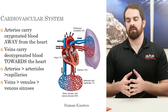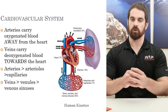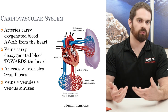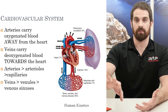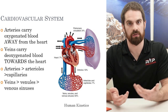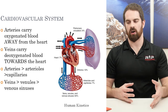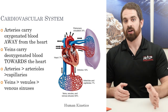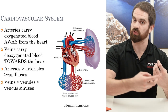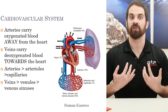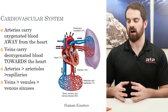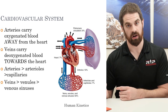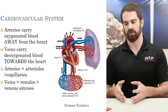Arteries are tubules that carry oxygenated blood away from the heart — carrying fresh, oxygen-rich blood to other tissues like skeletal muscle. Veins, on the other hand, carry deoxygenated blood back toward the heart so it can be oxygenated again in the lungs. In terms of size, arteries are biggest, moving into arterioles, then capillaries — the smallest. On the venous side we have veins, venules, and venous sinuses. The heart pumps blood into the lungs, then through the body, with oxygen being extracted at various tissues via arteries and veins.